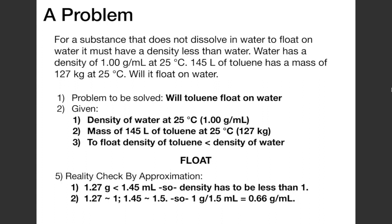The second approach is to approximate 1.27 as 1 and 1.45 as 1.5, giving 1 gram per 1.5 milliliters, which yields an approximate density of 0.66 grams per milliliter. This is lower than what we calculated, but it's in the ballpark, and it's also less than 1.